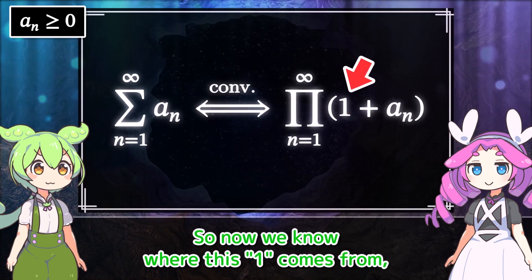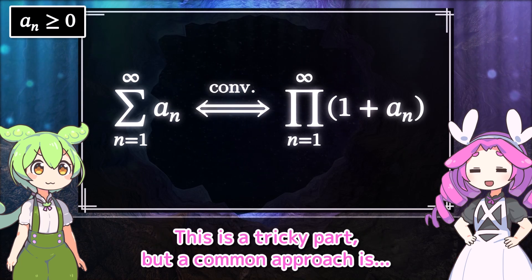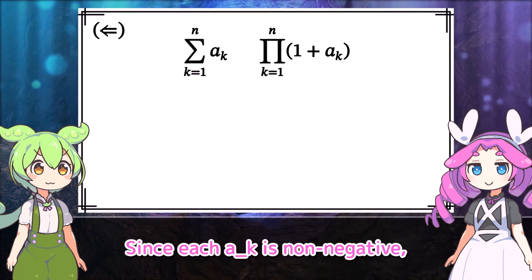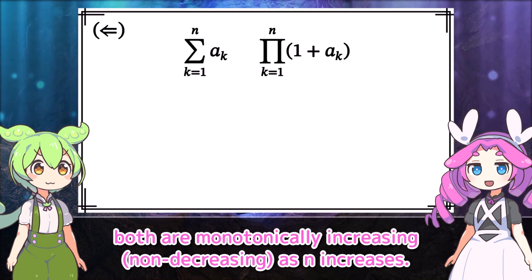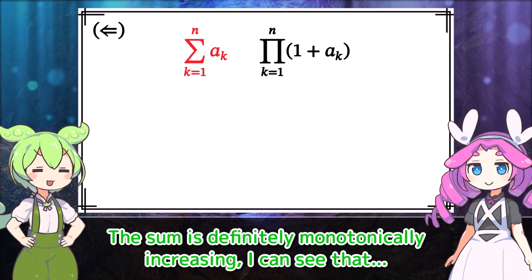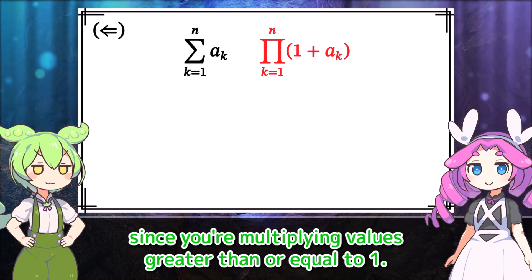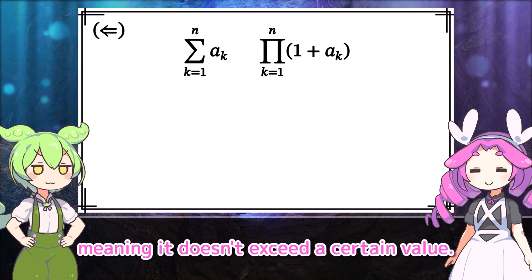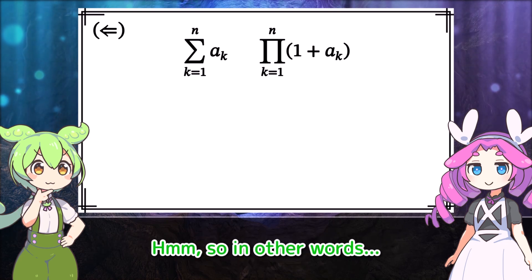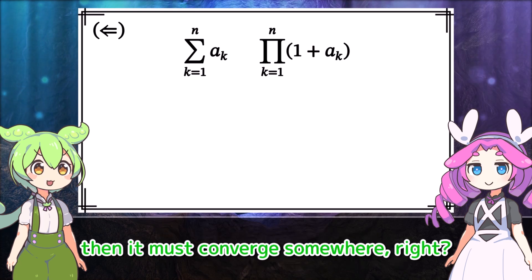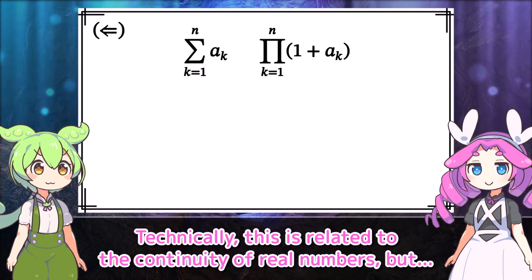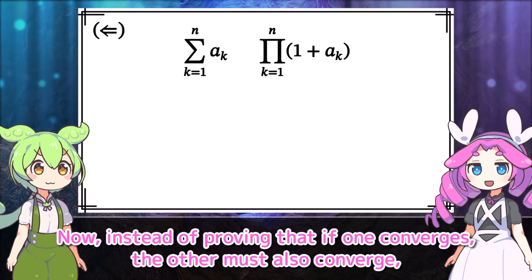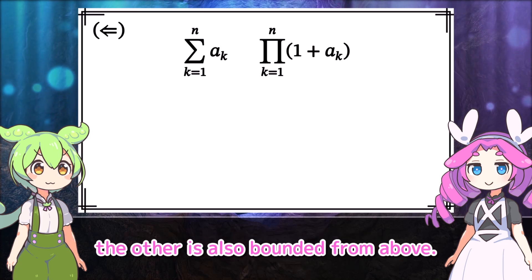So now we know where this 1 comes from. But how do we prove that the convergence of the two limits is equivalent? A common approach is: instead of thinking about the limits, let's consider the partial sum and the partial product up to the nth term. Since each a_k is non-negative, both are monotonically increasing as n increases. The product is also monotonically increasing since you're multiplying values greater than or equal to 1. The condition for convergence as n tends to infinity is equivalent to the condition of being bounded from above.